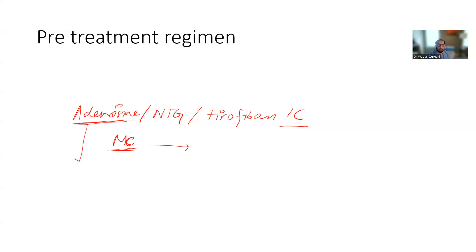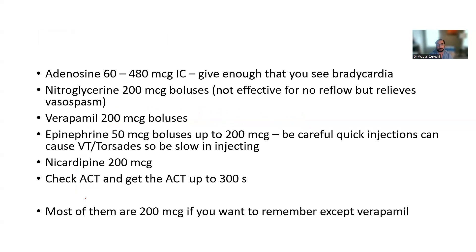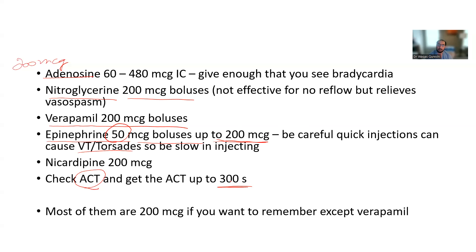One word of caution about adenosine: some people give only 60 or 120 micrograms. How do you know it's enough? When there's a heart block on the ECG — a P wave followed by no QRS — that's when it's enough. Otherwise, keep giving 60 microgram repeated injections. An easy way to remember dosing is that almost everything is 200 micrograms: adenosine 200 mcg, nitroglycerin 200 mcg, Rapamil 200 mcg, epinephrine up to 200 mcg boluses (give it slow — it can cause VT or torsades), nicardipine 200 mcg. Also check ACT and try to keep it around 300, below 350.